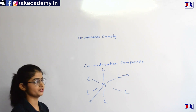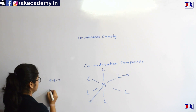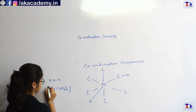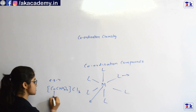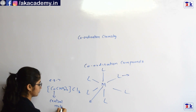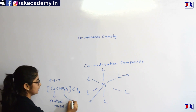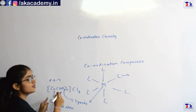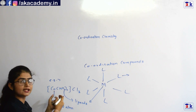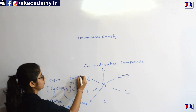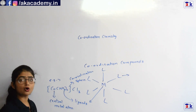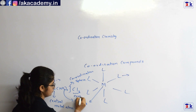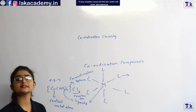Now, how are coordination compounds actually represented? This is the general representation of a coordination compound. Cobalt here is our central metal atom. These are the ligands. Inside the square bracket, the metal is attached to the ligands, and this square bracket is called the coordination sphere. Outside the coordination sphere, the ions you see are called counter ions, and that part is called the ionization sphere.